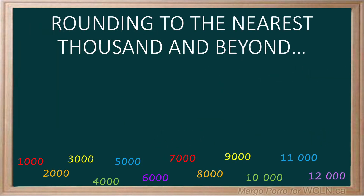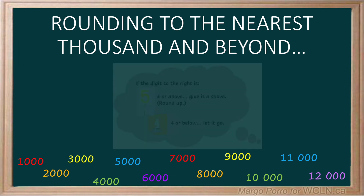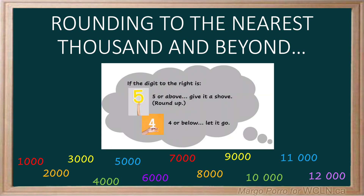Now you can round to the nearest thousands and beyond. Just remember: look at the digit to the right of the place you're going to round to. If the digit to the right is five or above, give it a shove and round up. If it's four or below, let it go.